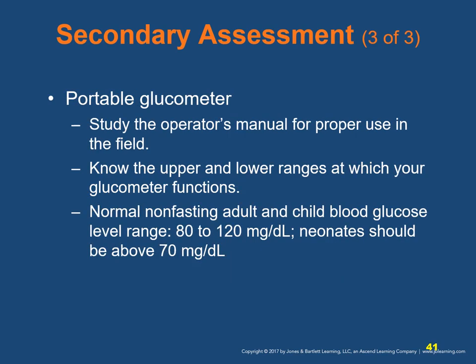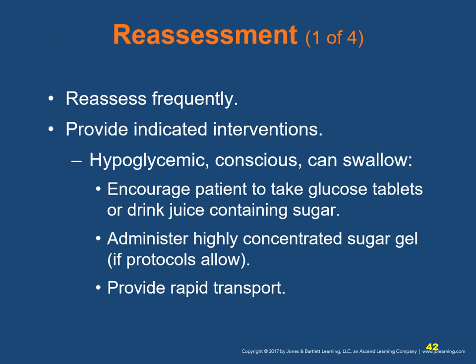With portable glucometers, study the operator's manual for proper use in the field and know the upper and lower ranges at which your glucometer functions. Normal non-fasting adult and child blood glucose levels range from 80 to 120 mg/dL. Neonates should be above 70 mg/dL. Reassess the patient with diabetes frequently to assess any changes: improved mental status, intact ABCs, and patient response to interventions. Base glucose administration on serial glucometer readings or a deteriorating level of consciousness.